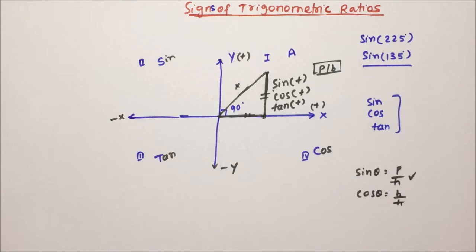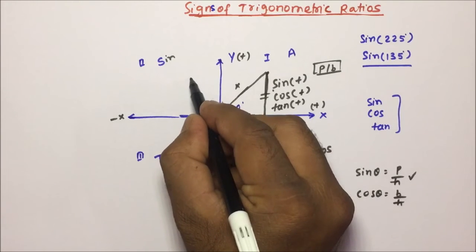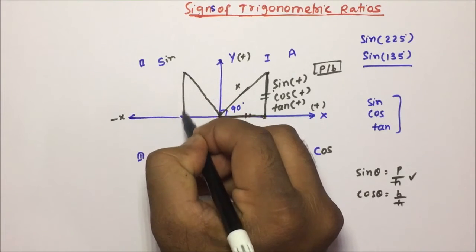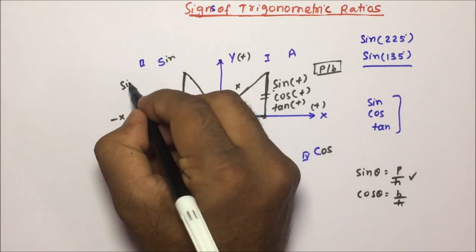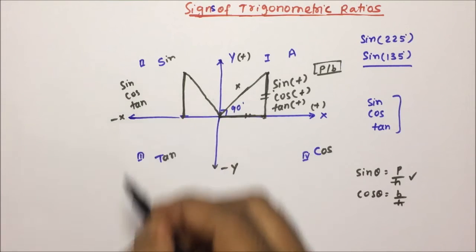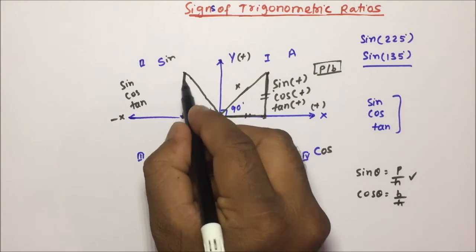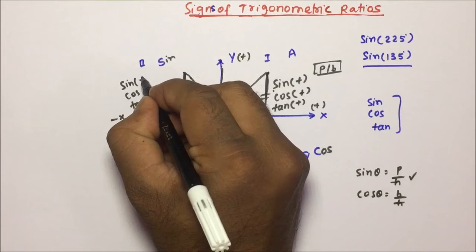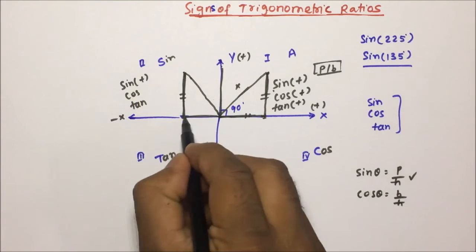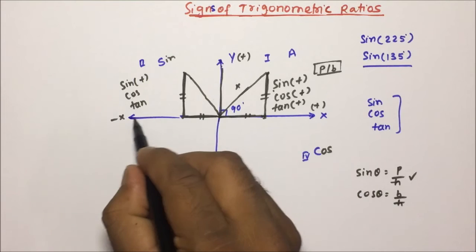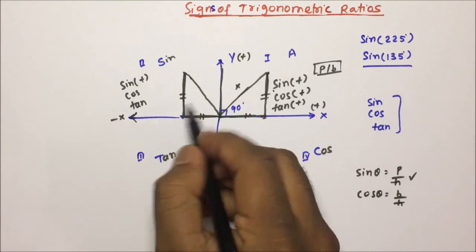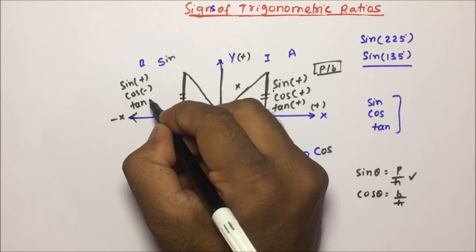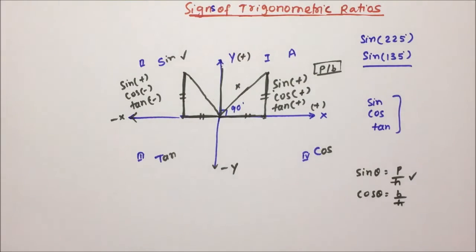In the second quadrant, you make a triangle again. Sine — the perpendicular is along the positive y-axis, so sine will be positive. Cos — the base is along the negative x-axis, so cos will be minus. Tan equals sine by cos, so plus divided by minus will be minus. Therefore, in the second quadrant, only sine is positive.